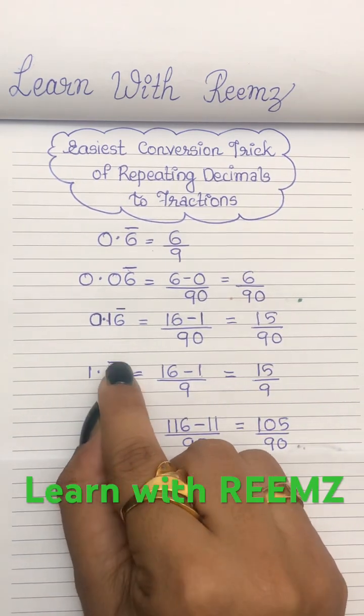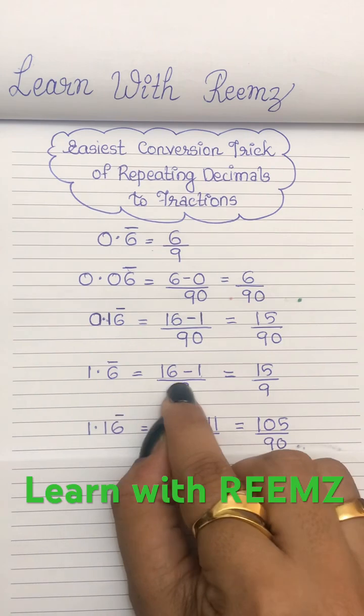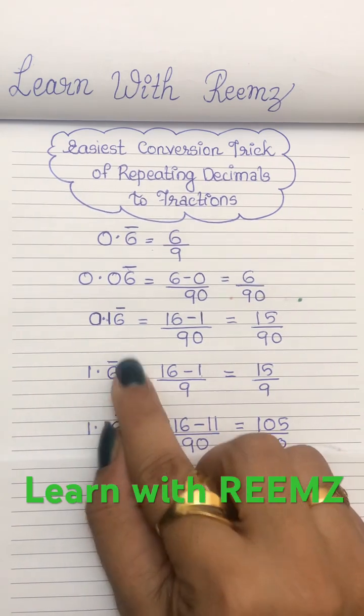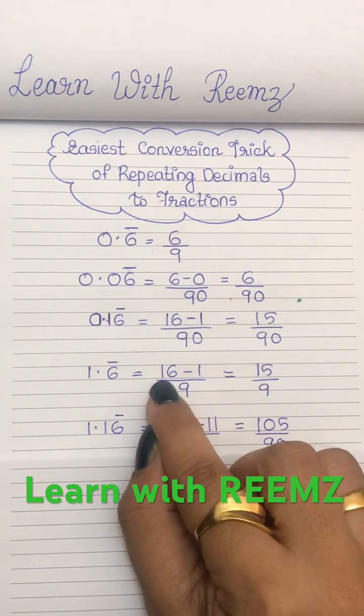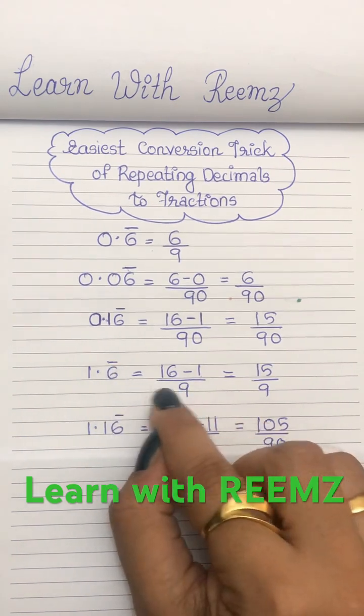The next one is 1.6 bar. So without the decimal, the number is 16. So covering the repeating term, we have 1. So 16 minus 1 divided by one repeating term, so 9.